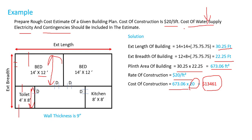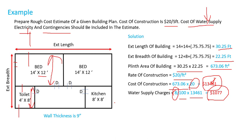Now we need to add water supply charges, electricity, and contingencies as per our question. Water supply charges will be taken as 8%, so 8 divided by 100 multiplied by the total cost of $13,461, which gives us $1,077. Similarly, electricity charges are also 8%, giving us another $1,077.